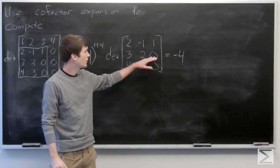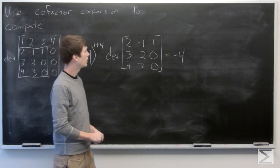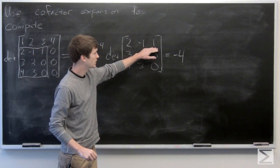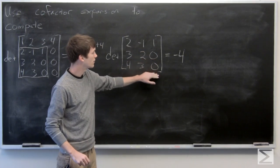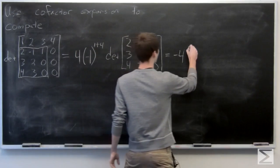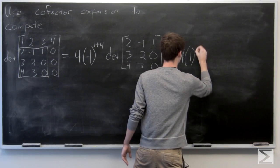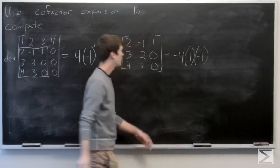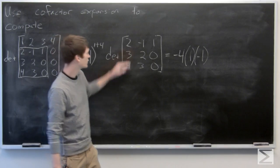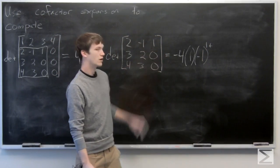And we'll go ahead and use cofactor expansion again. And this time, we'll do it on the third column, because we see that we have a 1 and then, again, 0's. So multiply this by 1 times negative 1. And this time, we're in the first row and the third column.